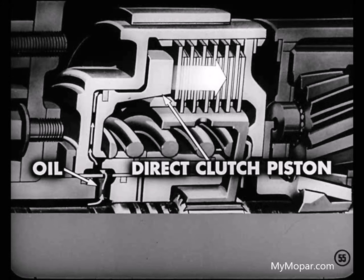Oil that goes to the direct clutch piston causes the piston to compress the clutch discs and plates, locking the clutch hub to the piston retainer. The drive then is through the clutch and the planetary gear sets, all turning at the same speed. And when this happens, the car is operating in direct drive.